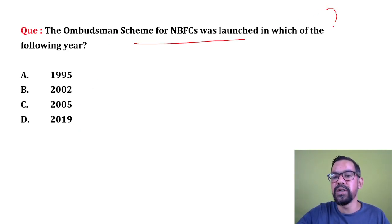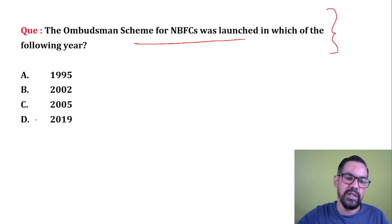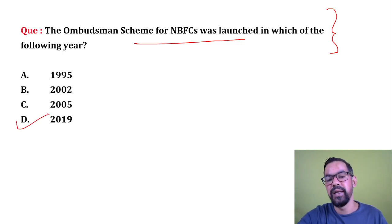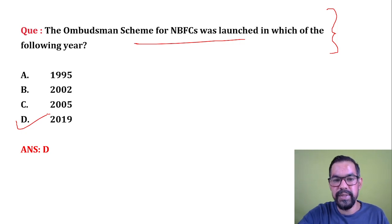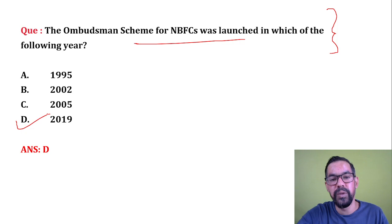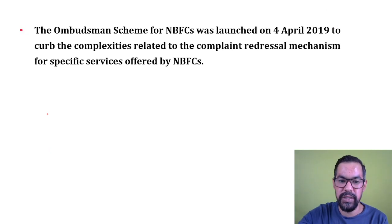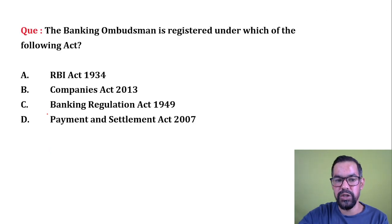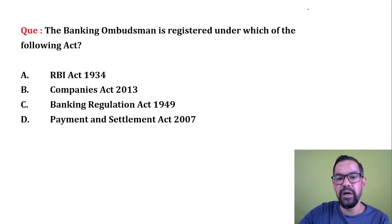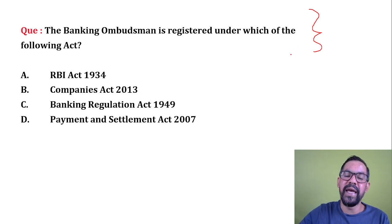Next question: Ombudsman Scheme for NBFCs was launched in which year? The correct answer is 2019. RBI launched the NBFC Ombudsman Scheme for those NBFCs whose asset size is more than 100 crore rupees. It was launched on 4th April 2019, and now it is also part of the Integrated Ombudsman Scheme.